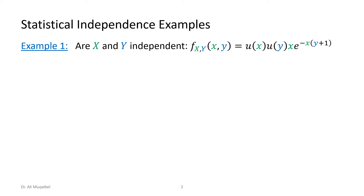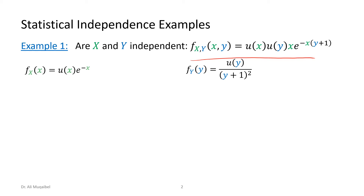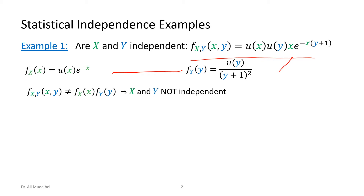Let's take some examples. Are X and Y independent if the joint PDF equals the following? This is an example we worked before, so the marginals are already known. We state the marginal PDFs for both cases. Now we check whether multiplying them together recovers the original joint PDF. Because that is not the case here, we conclude that X and Y are not independent — they are dependent.